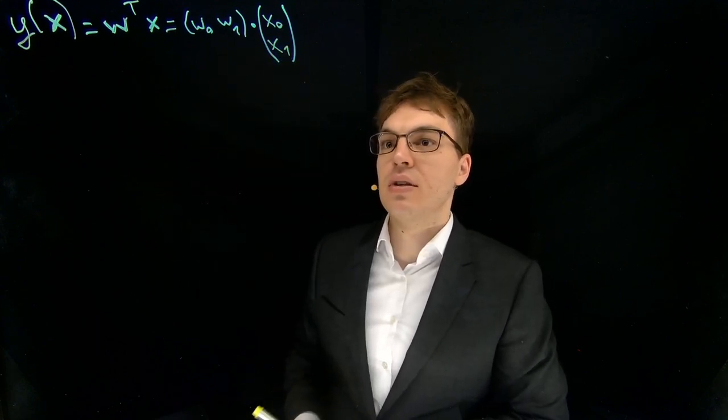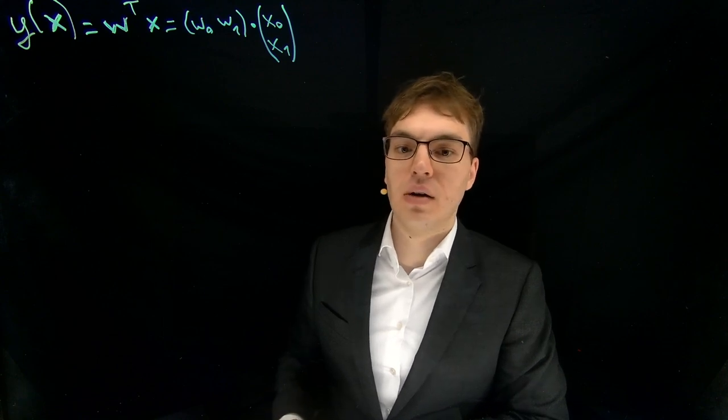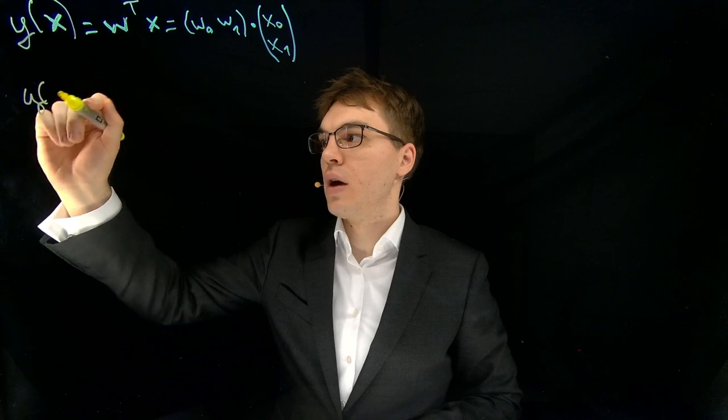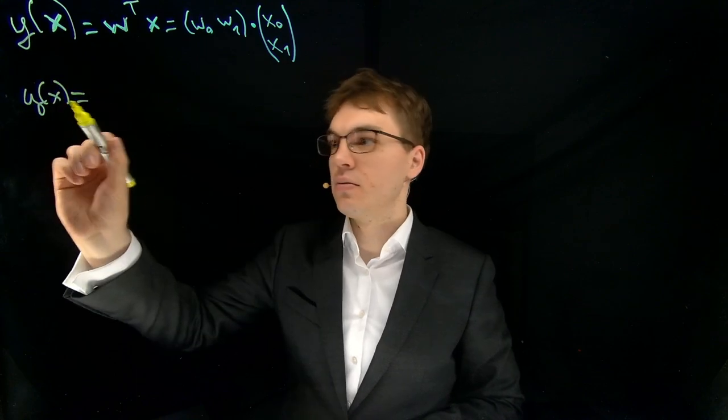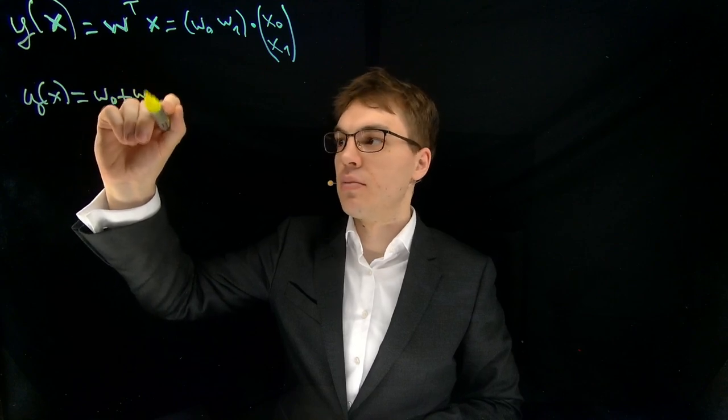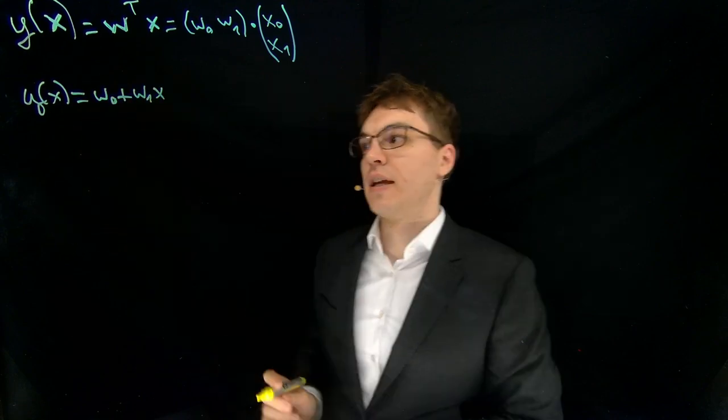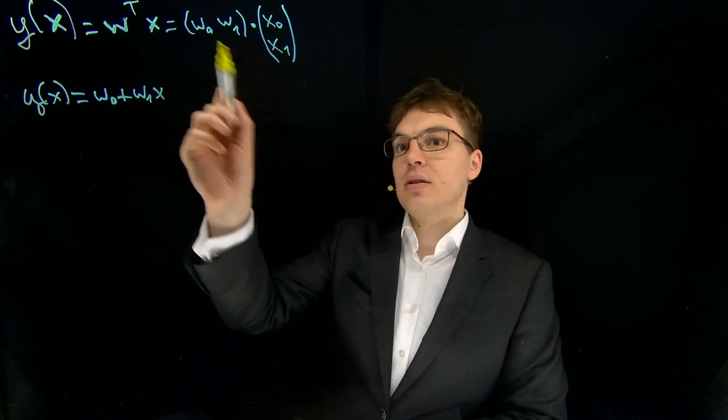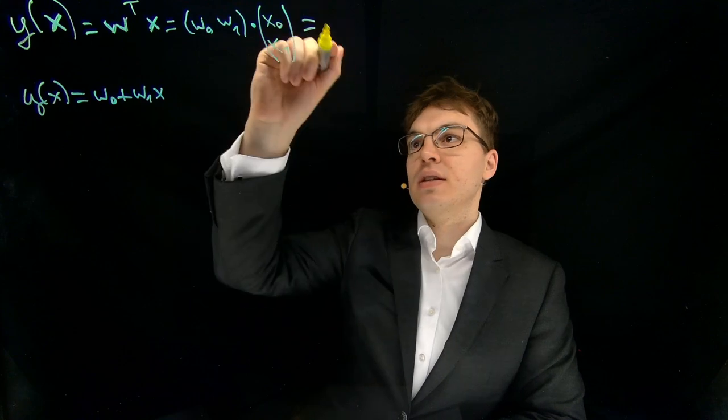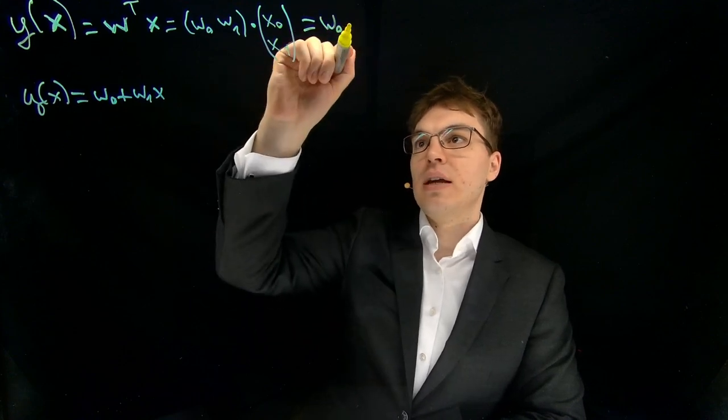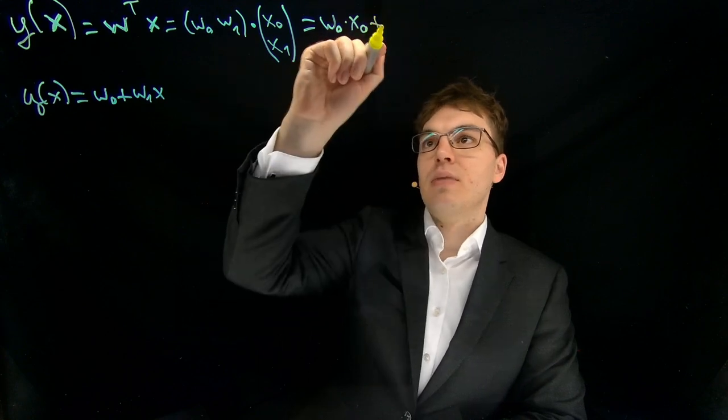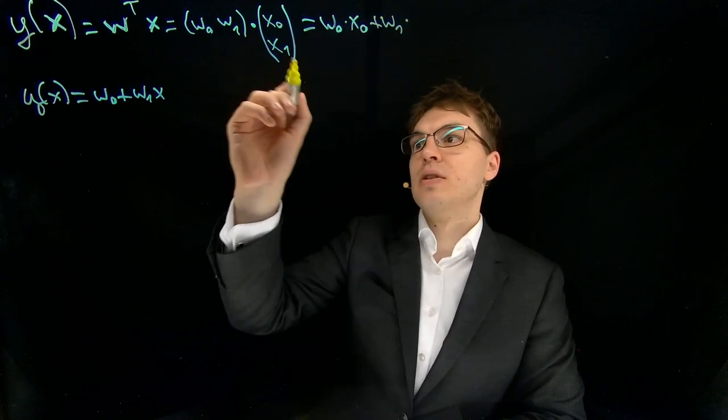So the question now is how does this relate to our given equation, which is y of x (not a vector) equals w0 plus w1 times x (not a vector). Well, let's compute this one over here and what we get is w0 times x0 plus w1 times x1.